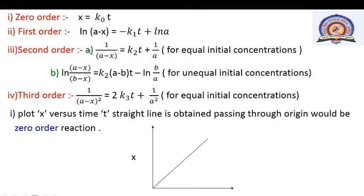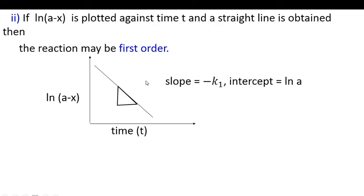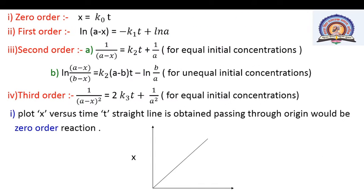For second order reactions, there are two cases: Case 1 for equal initial concentrations and Case 2 for unequal initial concentrations. For Case 1, the integrated rate equation is written as 1/(a−x) = k₂·t + 1/a, which is similar to y = mx + c. For Case 2 (unequal initial concentrations), ln[(a−x)/(b−x)] = k₂·(a−b)·t + ln(a/b).